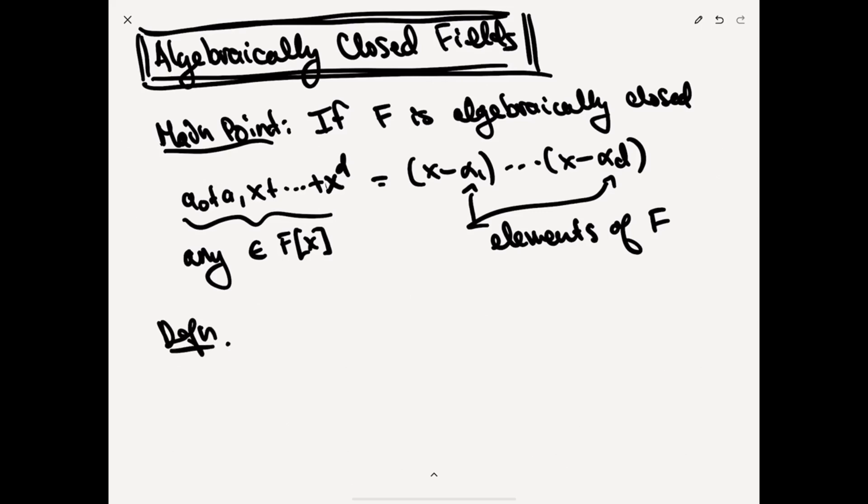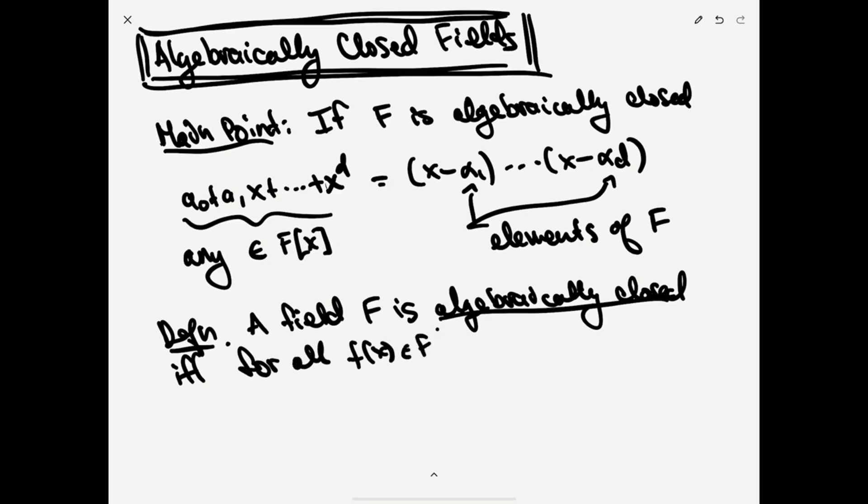where these things are elements of F. And this is any polynomial off the street, any element of F[X]. So let's just give the formal definition. The formal definition says a field F is algebraically closed